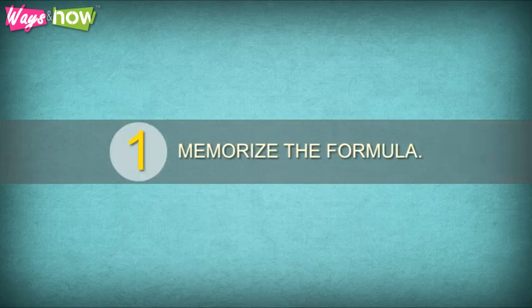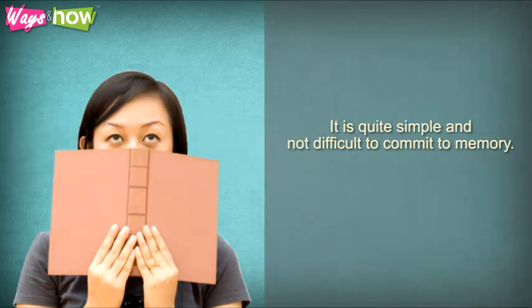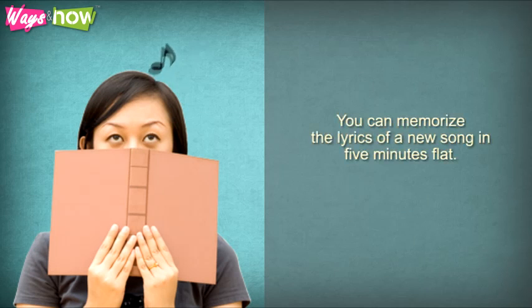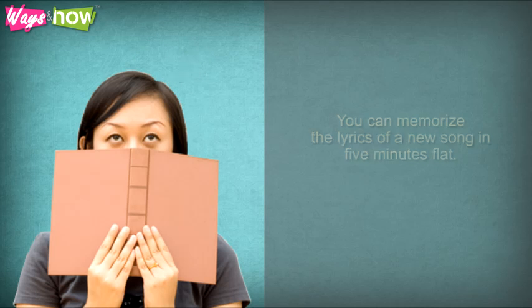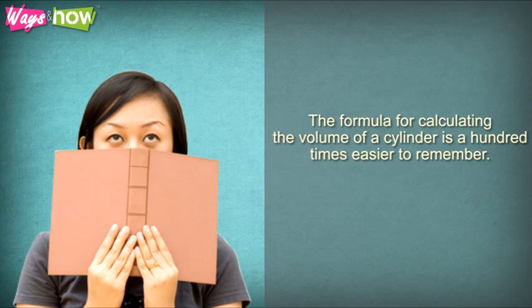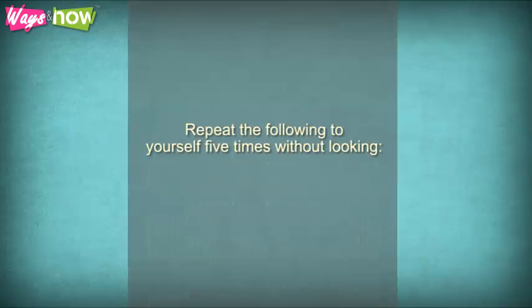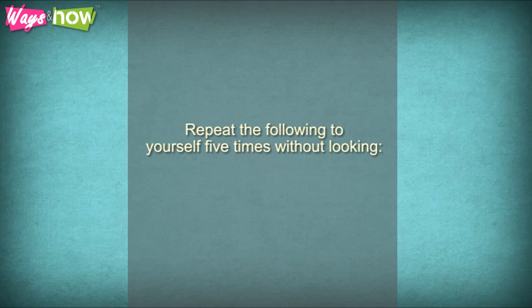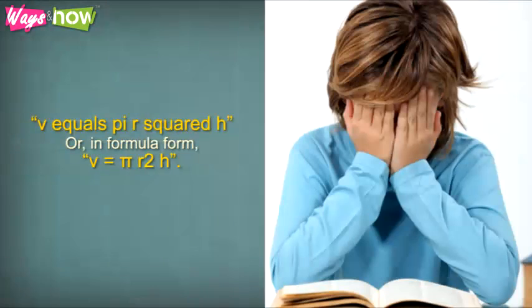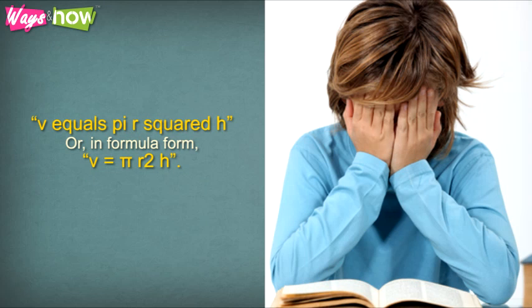Memorize the formula. It is quite simple and not difficult to commit to memory. You can memorize the lyrics of a new song in five minutes flat. The formula for calculating the volume of a cylinder is a hundred times easier to remember. Repeat the following to yourself five times without looking: V equals pi r squared h.